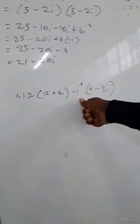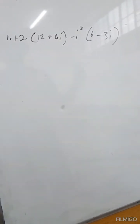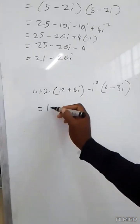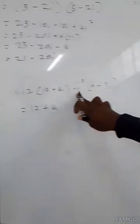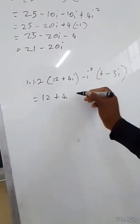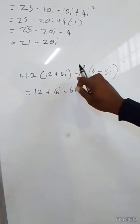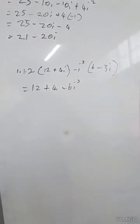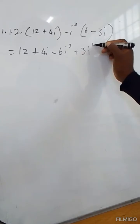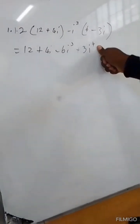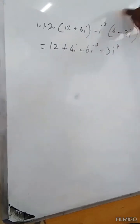Example 2 — we are going to deal with the law of i. So here it will be like this: equals 12 plus 4i, minus i³ times 6, which will be negative 6i³, minus i³ times negative 3i, which will be positive 3i to the exponent 4. The reason for exponent 4 is because 3 plus the invisible 1 on this i — when we multiply, we add the exponents.